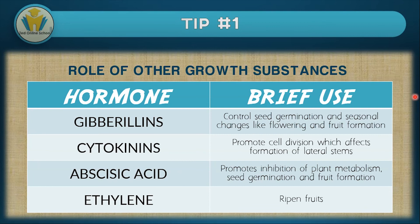The third hormone is abscisic acid. This hormone creates an inhibition of plant metabolism. Abscisic acid is essentially the opposite of gibberellins — it stops what gibberellins brings about: it stops seed germination and fruit formation. If abscisic acid is produced, the plant won't produce fruits. The two hormones can work together — in times when a plant does not need to germinate, it will produce abscisic acid.